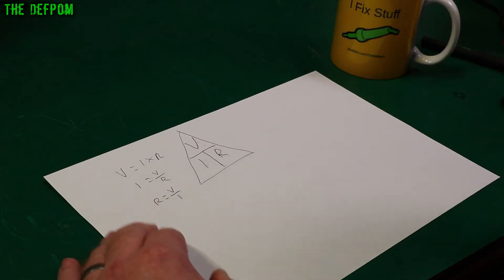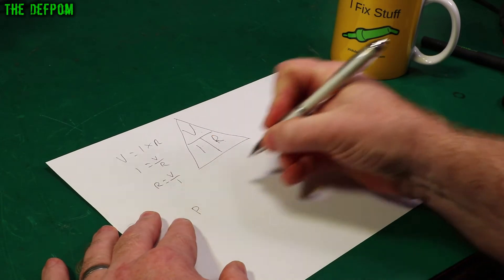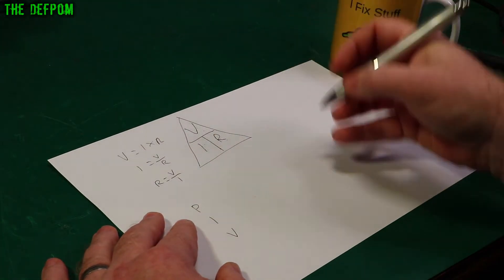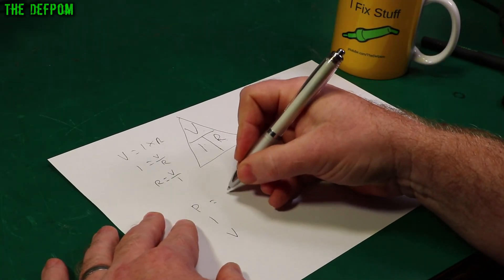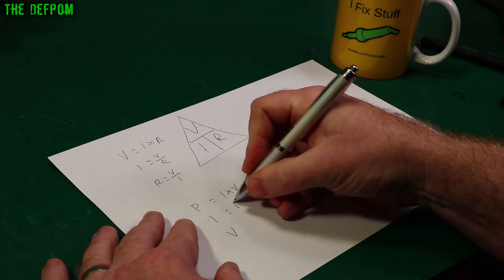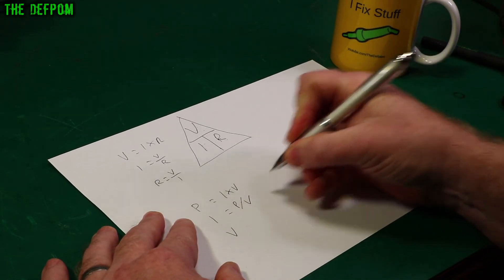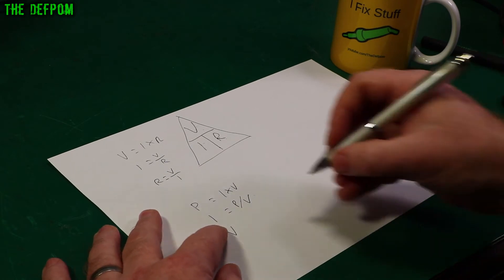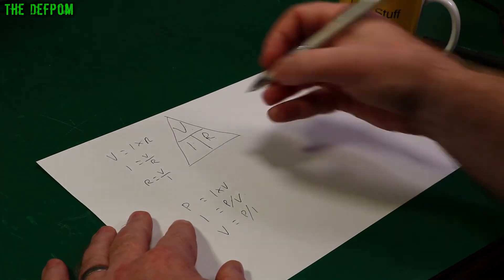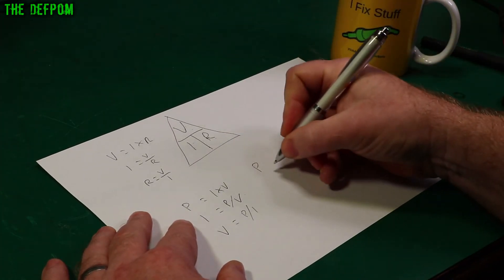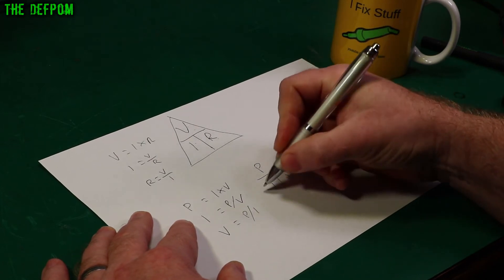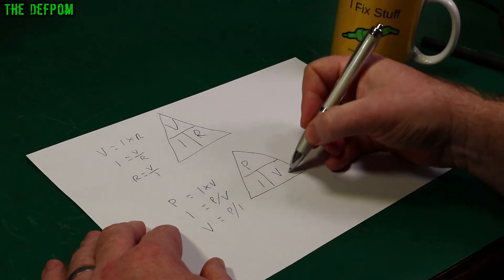Now we've also got a very similar one for power. And so you've actually got P, I, and V instead. Same triangle. Power equals current times voltage. Current is power divided by voltage. You got that so far? And voltage is power divided by current. So same triangle: P, I, and V. So power is watts, amps, volts.